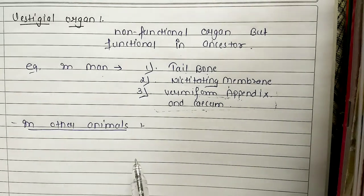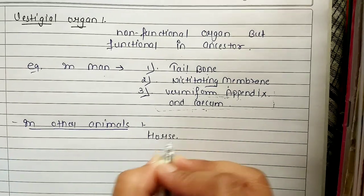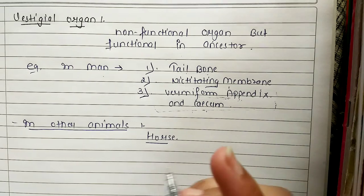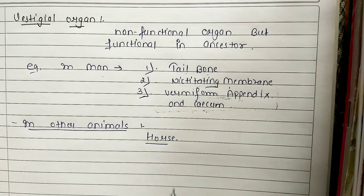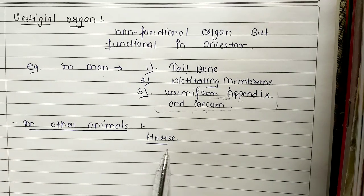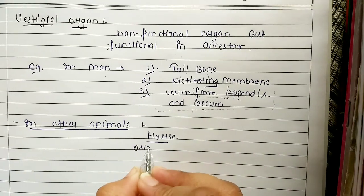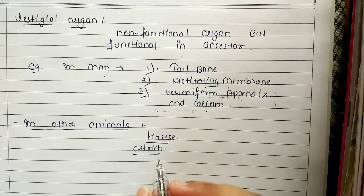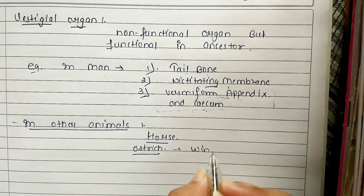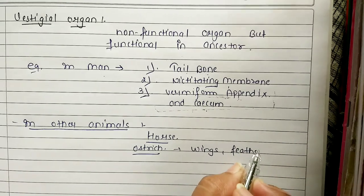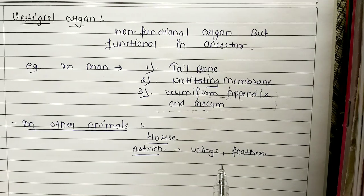If we talk about other vestigial organs in humans — the ear muscles that move the ears are non-functional. In any person, if they are functional, then they can move the ears — but mostly these muscles are non-functional, so they are vestigial organs. In horses, they had extra fingers in ancient times, but the modern horse has only one finger, so those are vestigial. Ostrich wings have feathers but are non-functional, so it is also a vestigial organ.